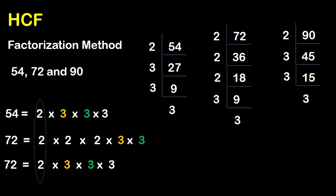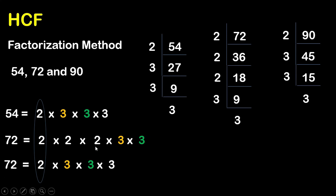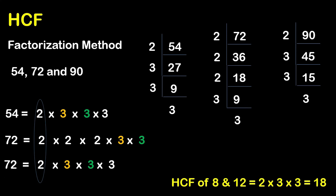Now we need to take the common factors. We have 2 appearing in all three. Then we have 3 appearing in all three. So the common factors are 2 and 3×3. So what is the common HCF? 2×3×3 equals 18. So our HCF today is 18.